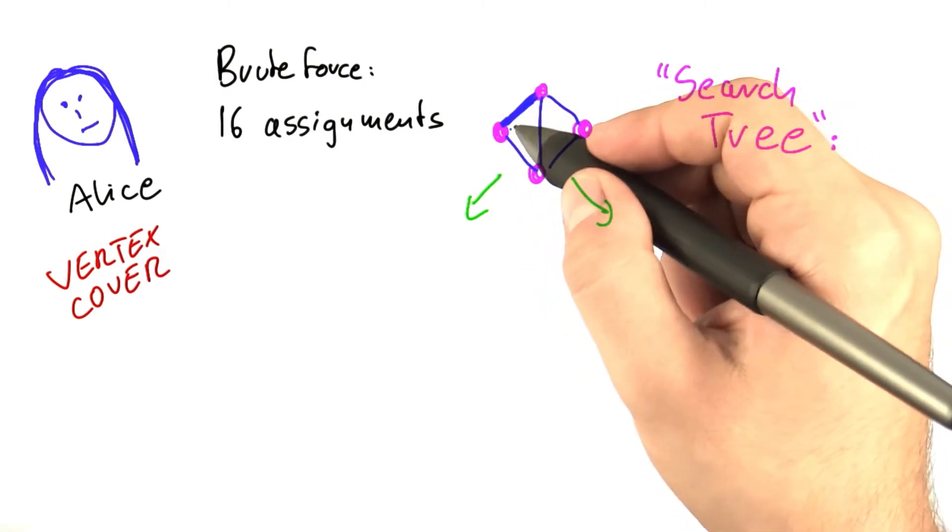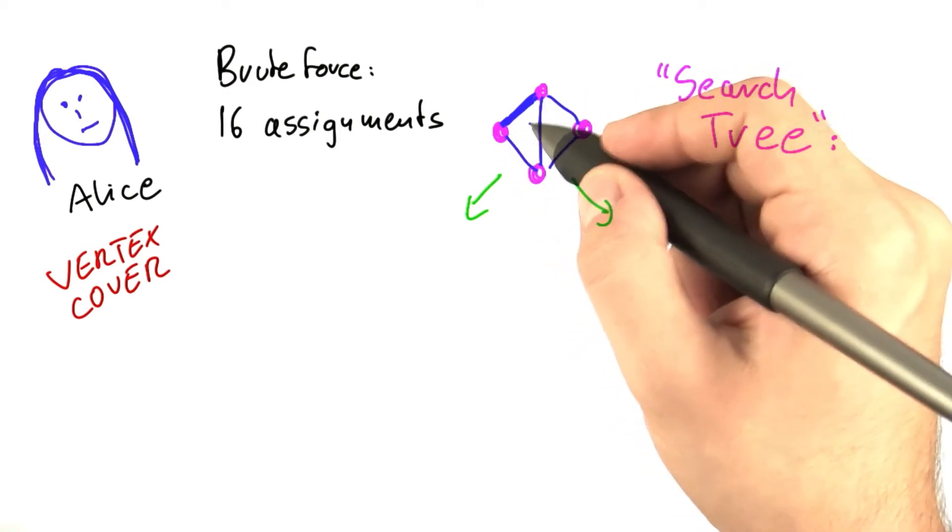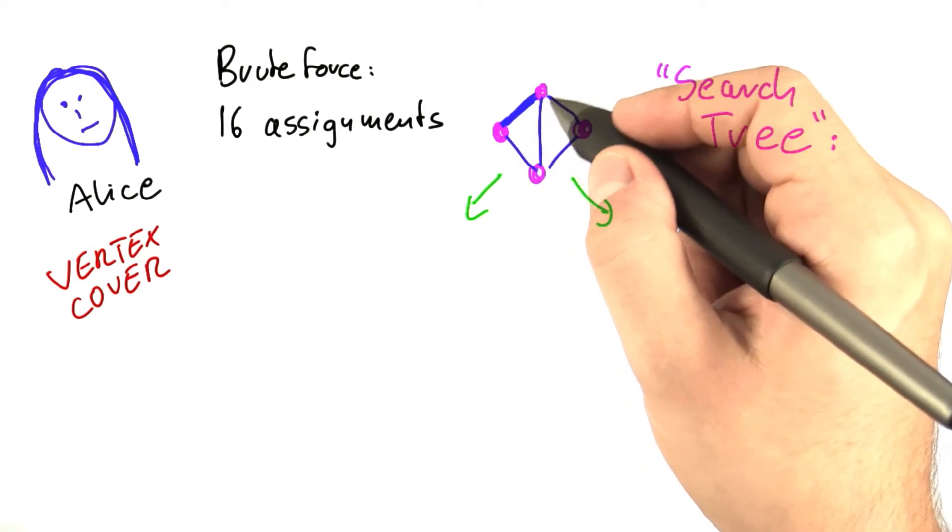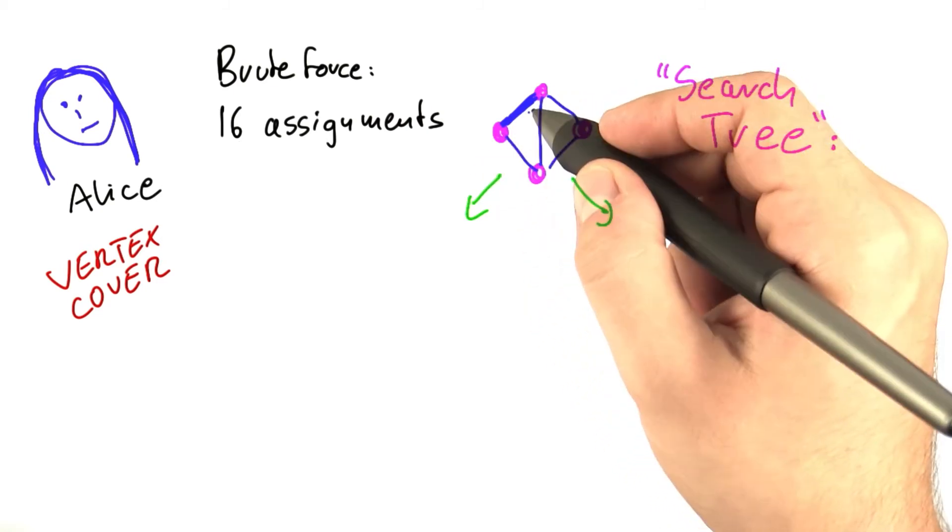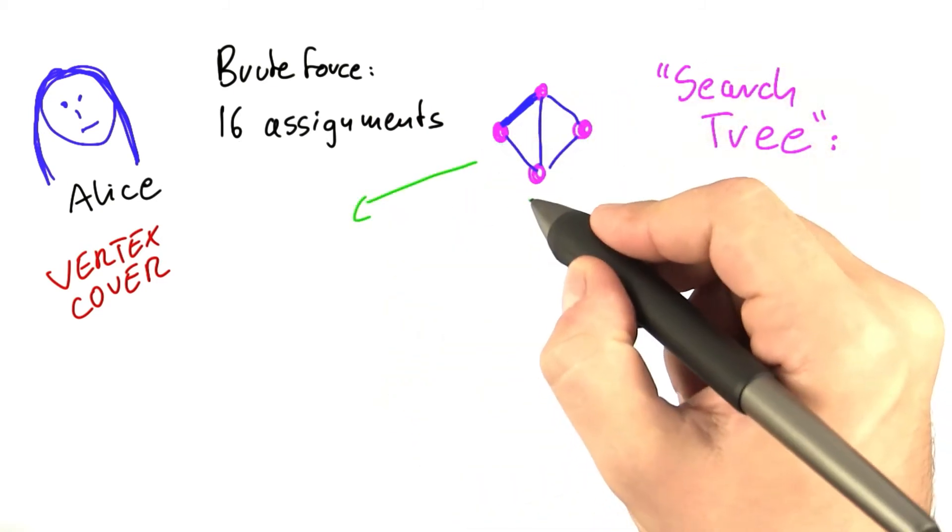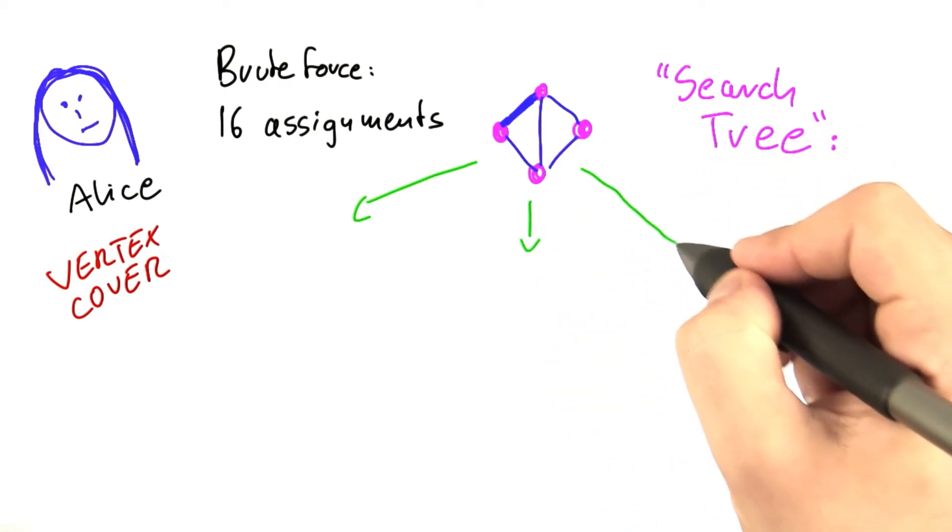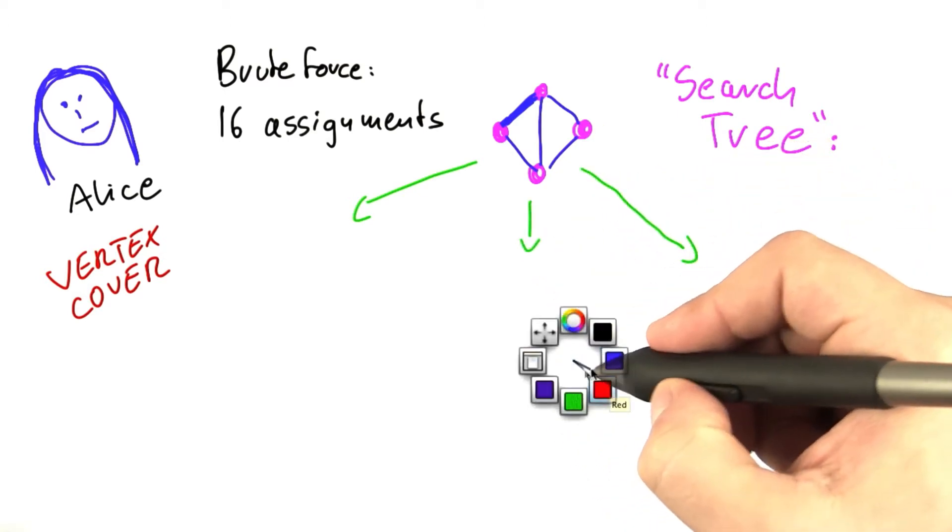And now we want to assign these endpoints to be in the vertex cover or to not be in the vertex cover. So far we have looked at the vertices individually, but we could also look at both vertices at the same time. So not go into two different possibilities, but actually go in three different possibilities.